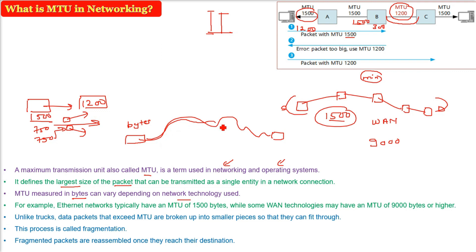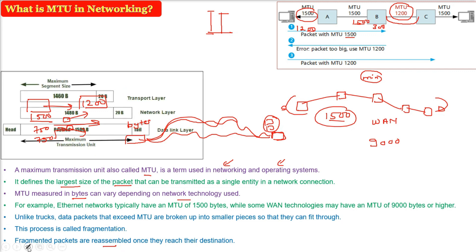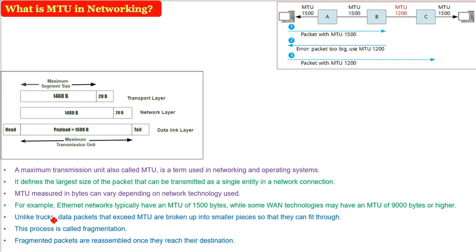This process is called fragmentation. When these packets are sent, these fragmented packets will reassemble once they reach the final destination. So MTU is all about the maximum size of packet that can pass through the network connection as a single entity.